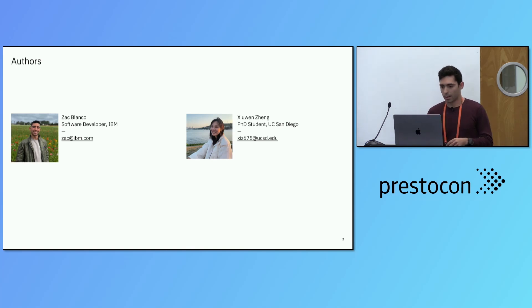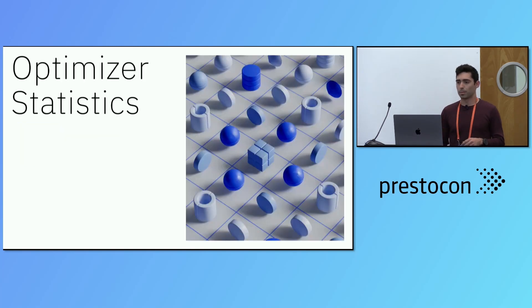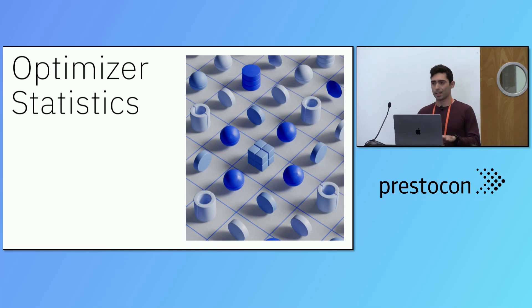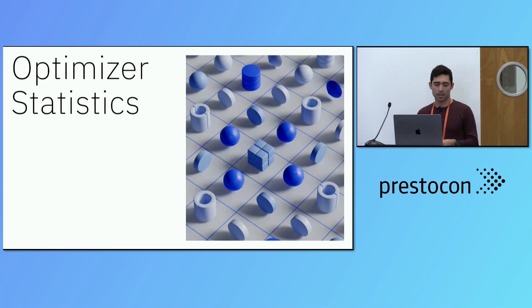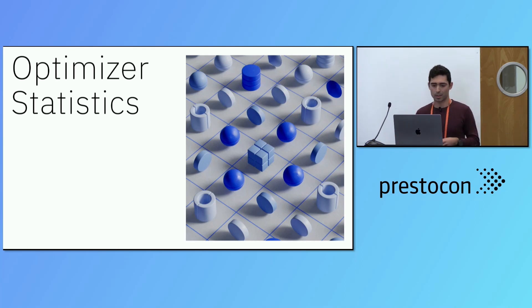Before we talk about the sampling part, I want to talk about table statistics — why they're useful and how the optimizer uses them, so that we all understand why the statistics are important.